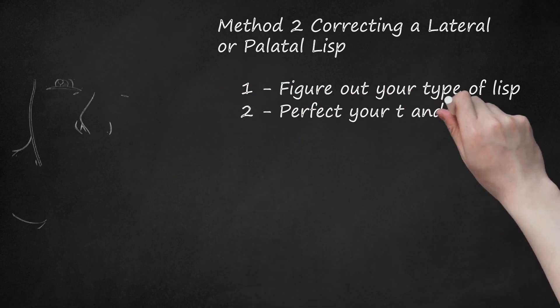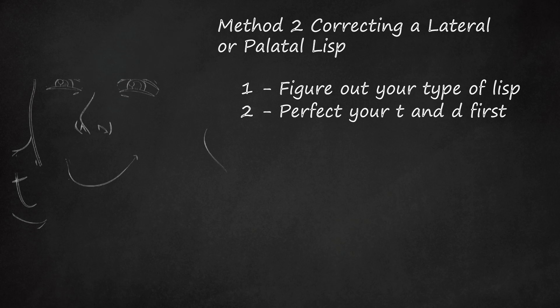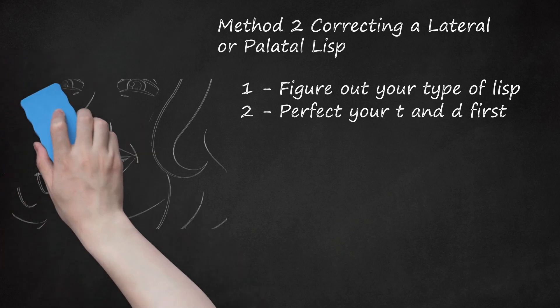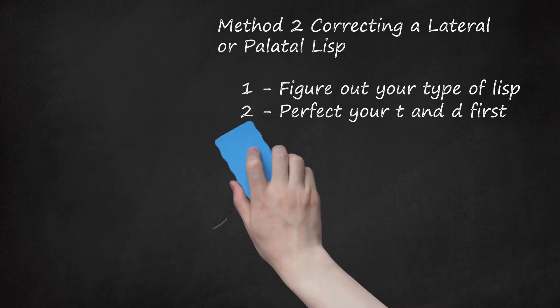Perfect your T and D first. The exercises below will only work if you can say the sounds T and D. If you have trouble with these as well, your speech impediment may involve difficulty raising your tongue tip, or difficulty raising the sides of your tongue. Practice the T and D sounds until you can enunciate them clearly, with no air rushing out the sides of your mouth. Visit a speech-language pathologist if you have difficulty with this step. Any speech exercise may be easier with a partner who can identify when you are making a mistake.